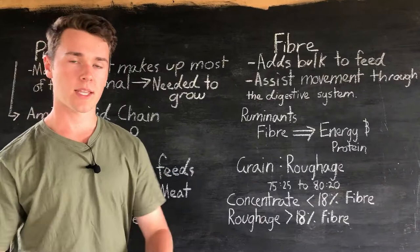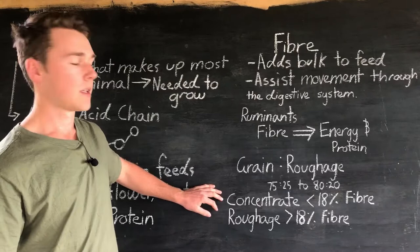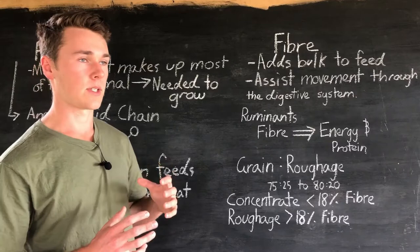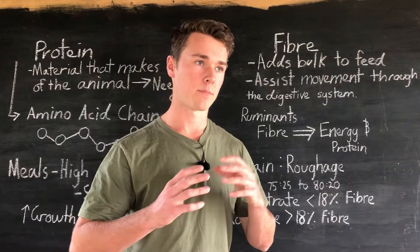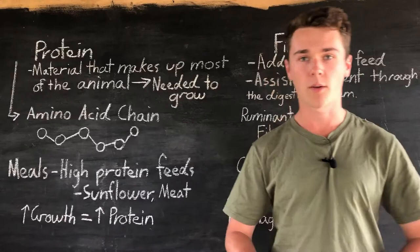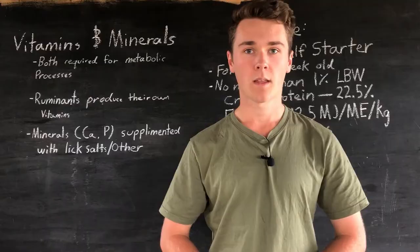In terms of feed terminology: anything with less than 18% crude fiber is called a concentrate, and anything greater than 18% crude fiber is roughage. When you see 'crude fiber' or 'crude protein' on a feed label, that means the pure amount of fiber or protein in that feed.